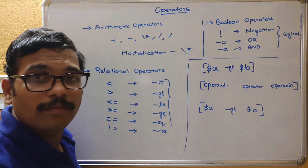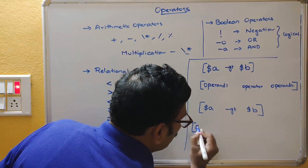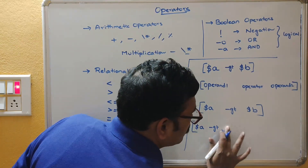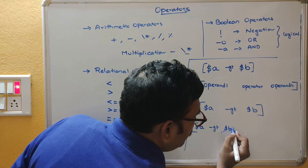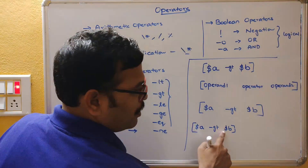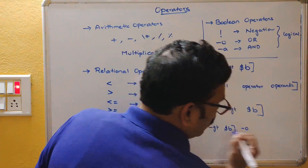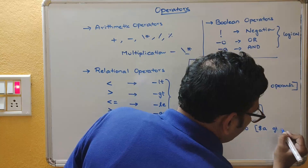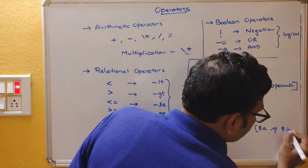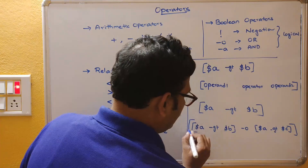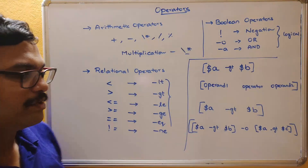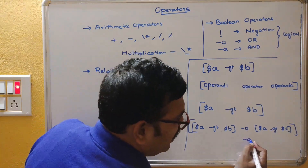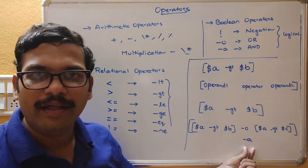If you want to apply a boolean operator with multiple conditions — for example, dollar-a greater than dollar-c AND another condition — you use hyphen-a for AND, or hyphen-o for OR between the conditions inside the square brackets.